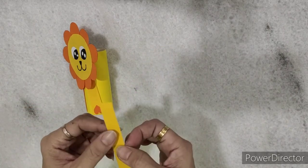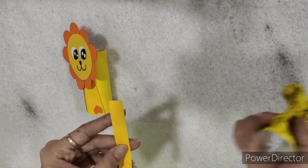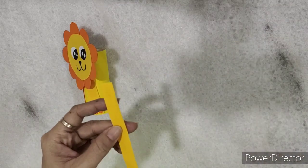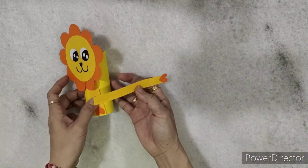Lastly, paste the tail on the back of the toilet roll, like this.